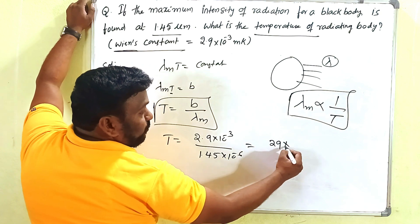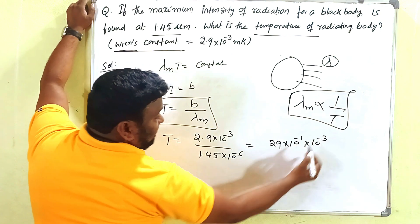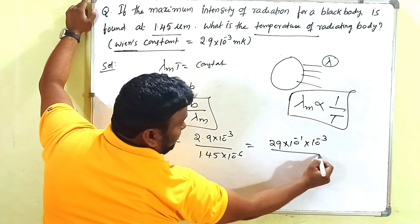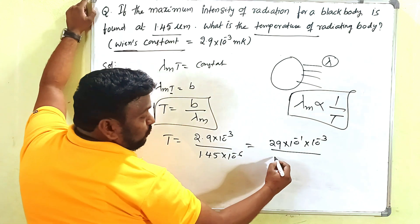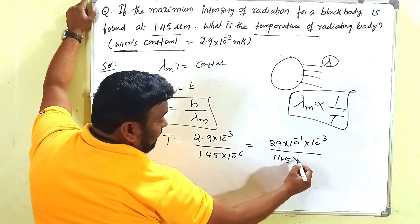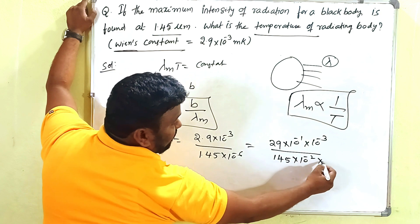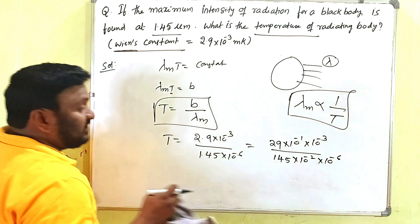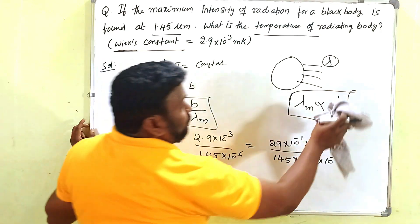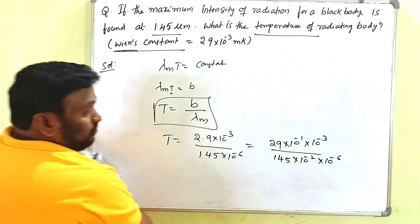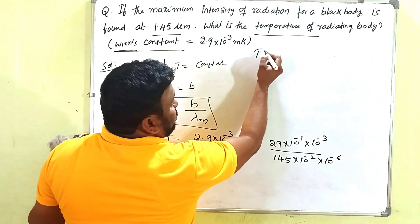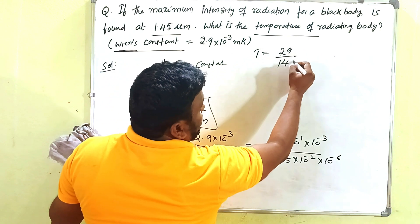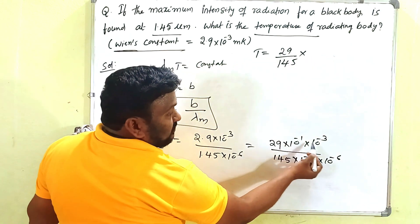We can rewrite the numerator as 29 × 10⁻¹ × 10⁻³ and the denominator as 14.5 × 10⁻¹ × 10⁻⁶. Simplifying, T = 29 / 145 × 10⁻³ / 10⁻⁶ = 29 / 145 × 10⁴.